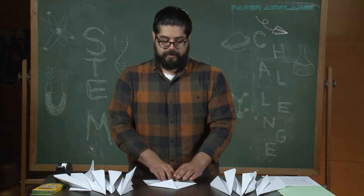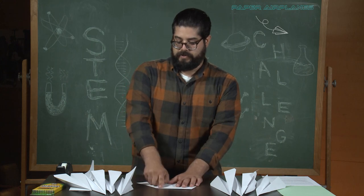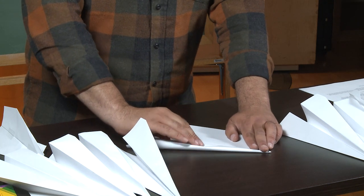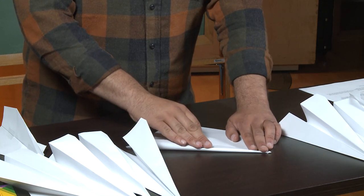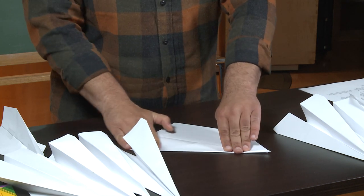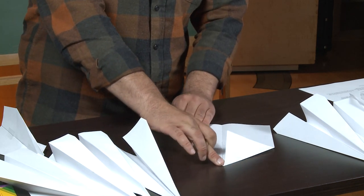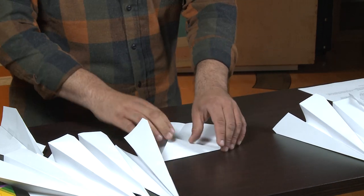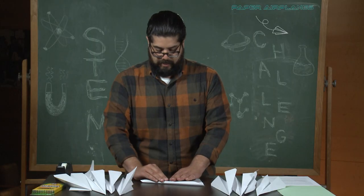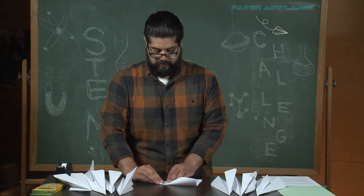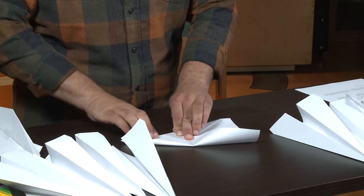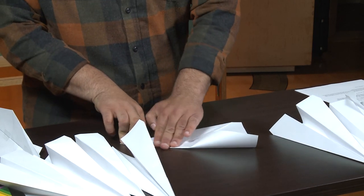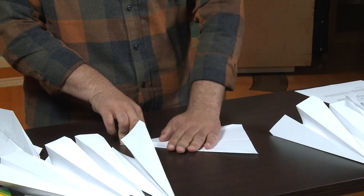So now we have what kind of looks like a little house with a point. Next you're going to take your next corner just like that and bring it in to the center to your seam again and flatten that out. So now you'll see your triangle looks a little bit longer with a different point. And then do the same thing on the other side. Pull your corner in just like that, to the center and flatten it out.